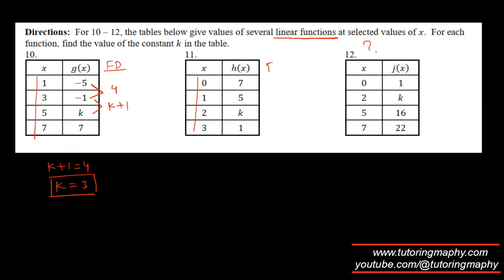For the next linear k problem: the first difference is −2, and k minus 5 must equal −2, so k = 3.